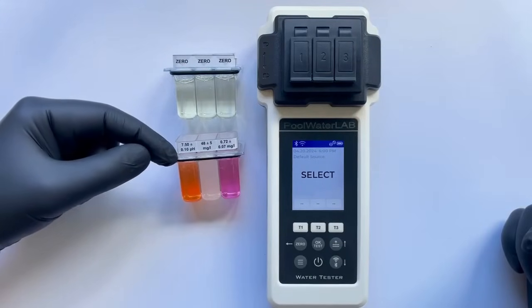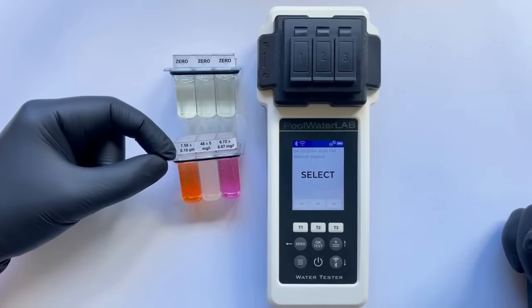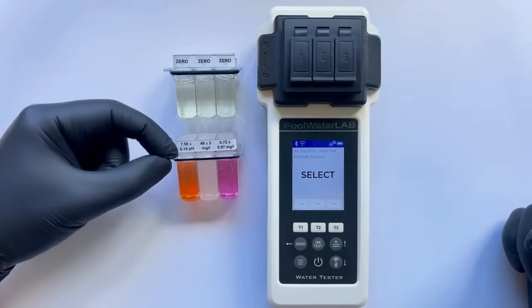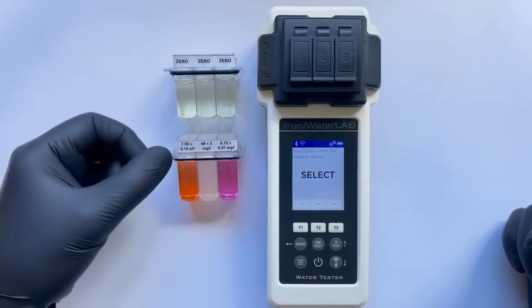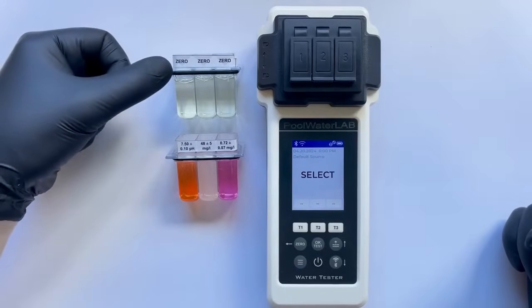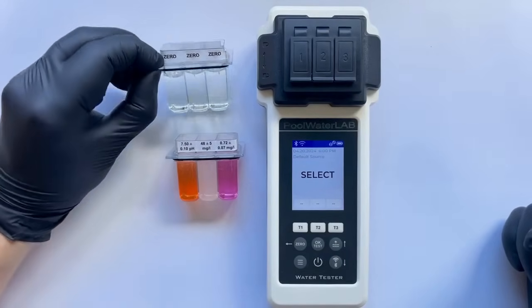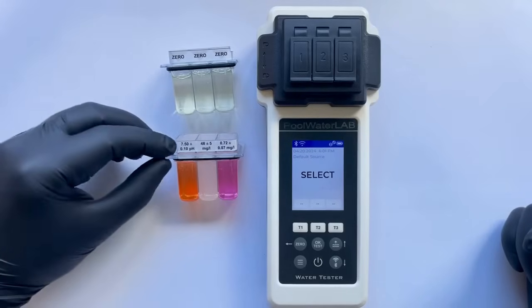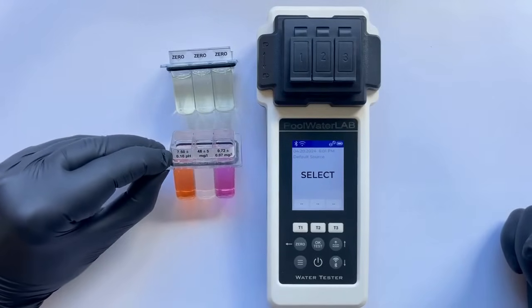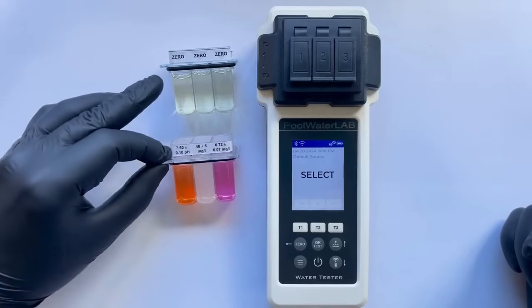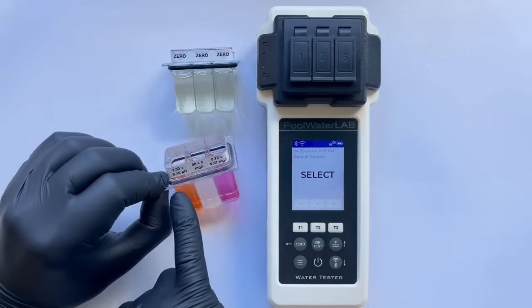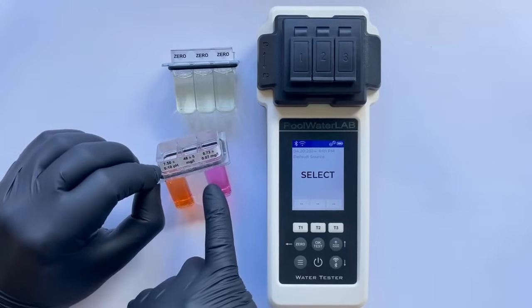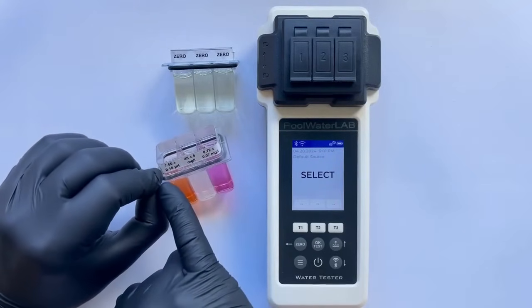Therefore, we currently have samples of pure water for the zero test, which is used to calibrate the tester and ensure it reads zero in the absence of contaminants. Additionally, we have a sample of this same water mixed with specific reagents. These reagents are added to measure the tester's response to changes in pH, CYA, and free chlorine levels under controlled laboratory conditions.